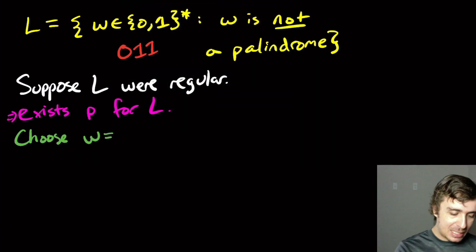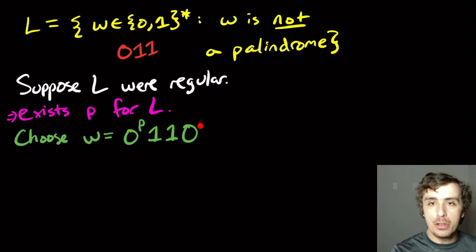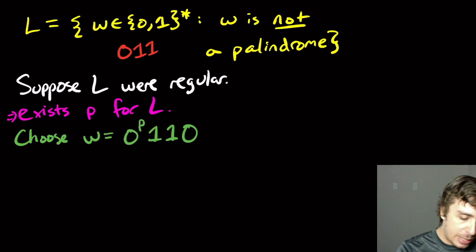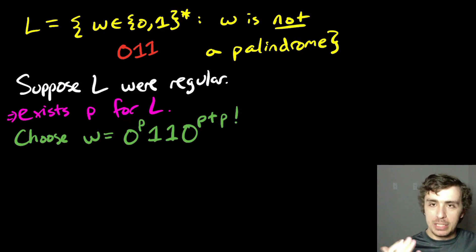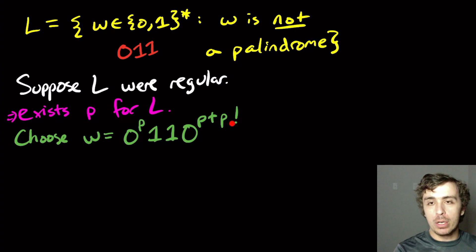Okay, so let's pick, let's say 0 to the P, 1. I'd like to do 1, 0, and I've got to have some number other than P here because if I put P here, then it's going to be a palindrome. I want something in the language to start with. So what I'm going to do is I'm going to pick P plus P factorial. So this is something called the P factorial trick. The reason is that no matter what you pump over here, P factorial is a multiple of the length of whatever you pumped over here, and we'll make that more precise later.